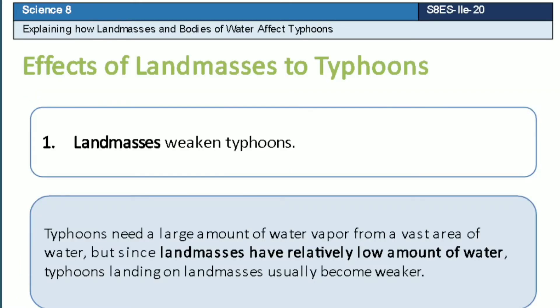Landmasses can weaken a typhoon in many ways. Landmasses weaken typhoons because typhoons need a large amount of water vapor from a vast area of water, but since landmasses have a relatively low amount of water, typhoons landing on landmasses usually become weaker.